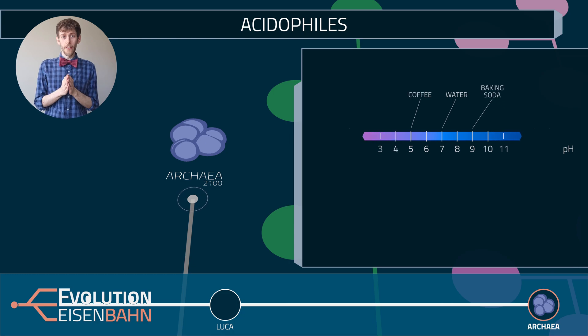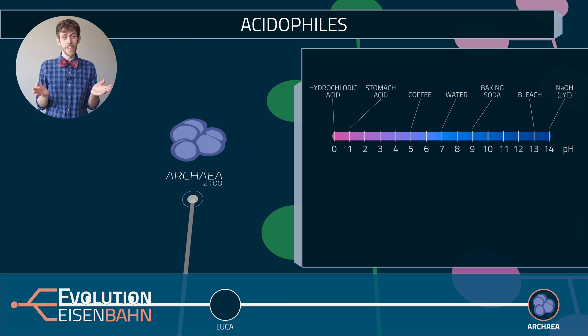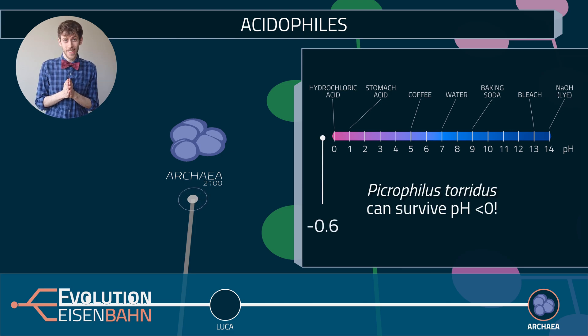And there are acidophiles, which can live in strong acid, down to a pH value of minus 0.6. If you know anything about pH scale, you realize how crazy acidic that is. That scale isn't even supposed to go below zero, and yet the acidophiles live there.